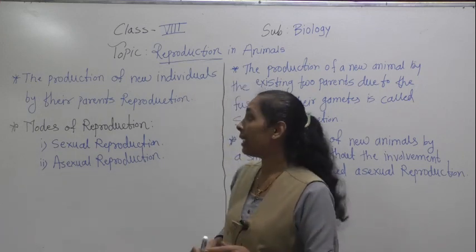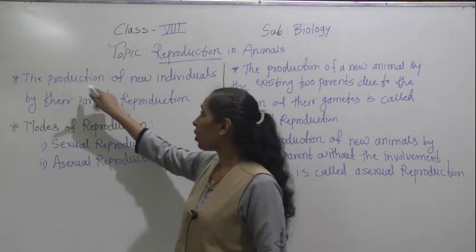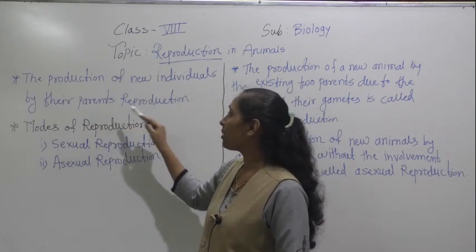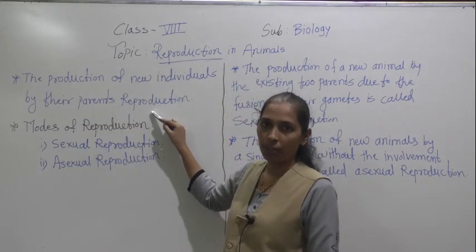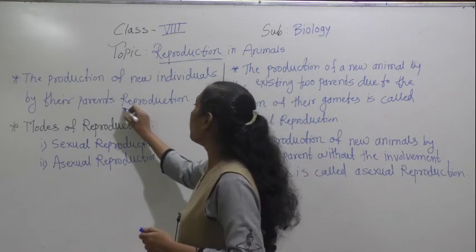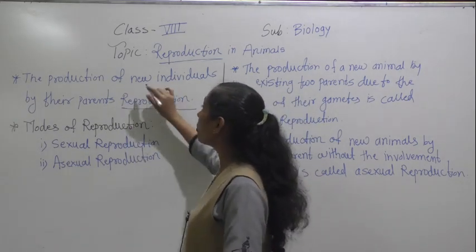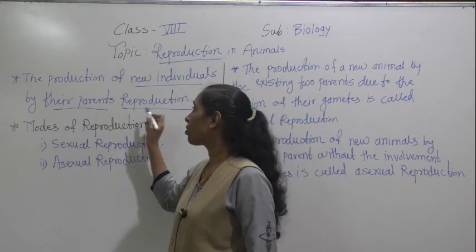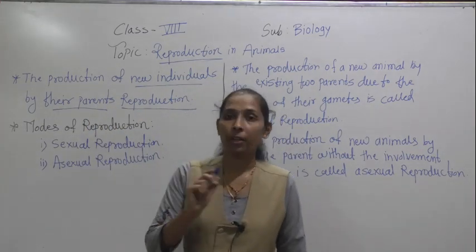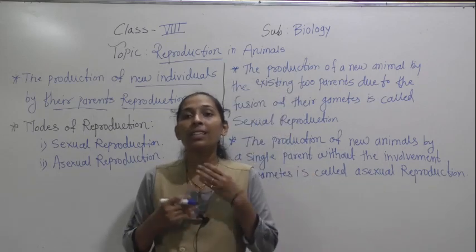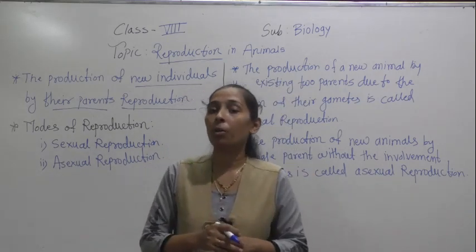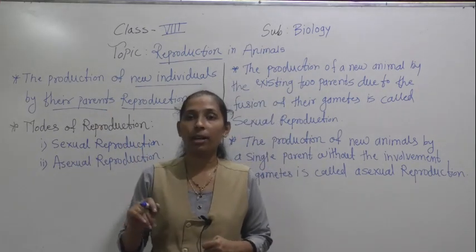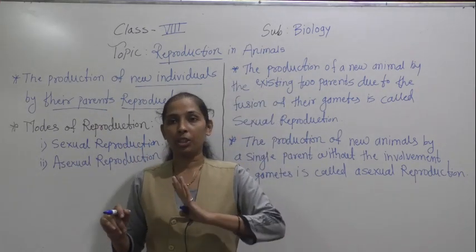So what is meant by reproduction? The production of new individuals by their parents is called reproduction. The parents are producing the same copy — the exact copy — as the newborn or new individual, and that process is called reproduction.